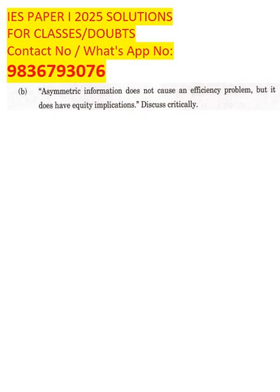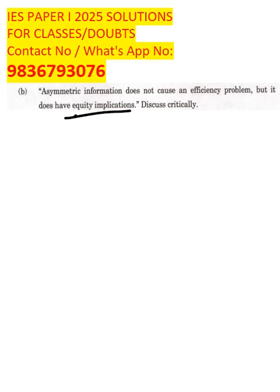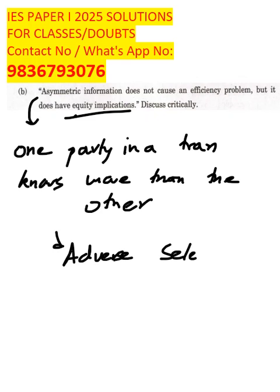Asymmetric information does not cause an efficiency problem. What is asymmetric information? Asymmetric information means one party in a transaction knows more than the other. Like seller knows card defects, insurer knows risk better. This can lead to a concept known as adverse selection and moral hazard.